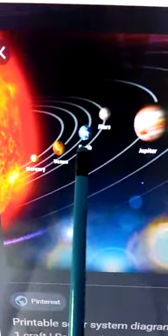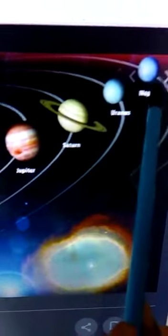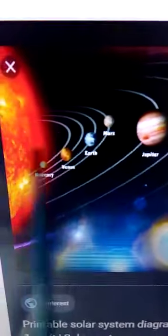Mercury, Venus, Earth, Mars, Jupiter, Saturn, Uranus and Neptune. These are the eight planets.